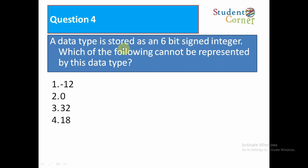A data type is stored as a 6-bit signed integer. Which of the following cannot be represented by this data type? Option 1: -12. Option 2: 0. Option 3: 32. Option 4: 18. The answer is 32.